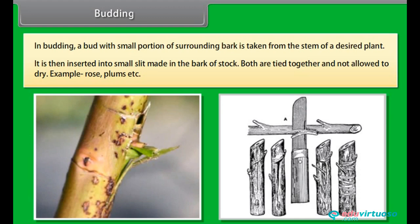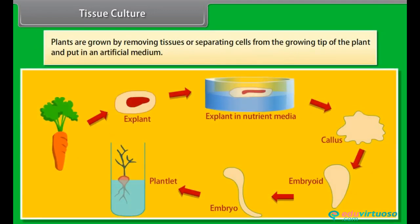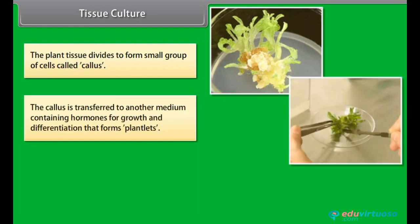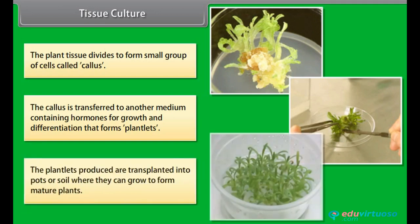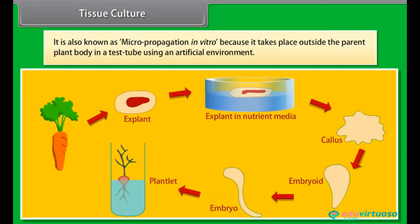Tissue culture is the production or propagation of new plants from isolated plant cells or small pieces of plant tissue in a synthetic medium or culture solution. Plants are grown by removing tissues or separating cells from the growing tip of the plant and putting them in an artificial medium. The plant tissue divides to form a small group of cells called callus. The callus is transferred to another medium containing hormones for growth and differentiation, which forms plantlets. The plantlets produced are transplanted into pots or soil where they grow into mature plants.